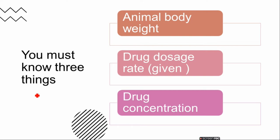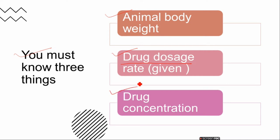There are three most important things to consider. First, we need to know the body weight of the animal — when the animal comes into our clinic we can weigh them easily. Second, we need to know the drug dosage rate. Third, the drug concentration is already written on the vials of many drugs; some dosages are also recommended by the manufacturer or the FDA.